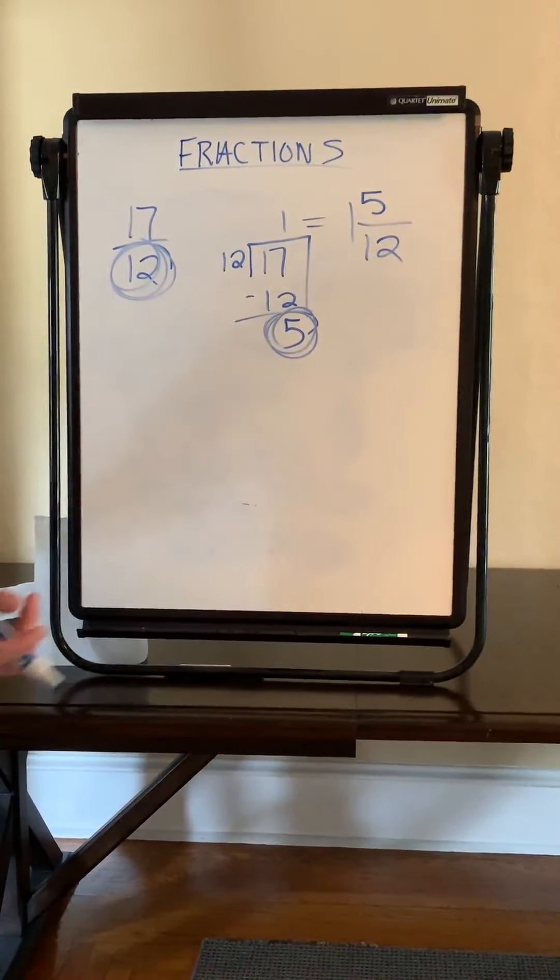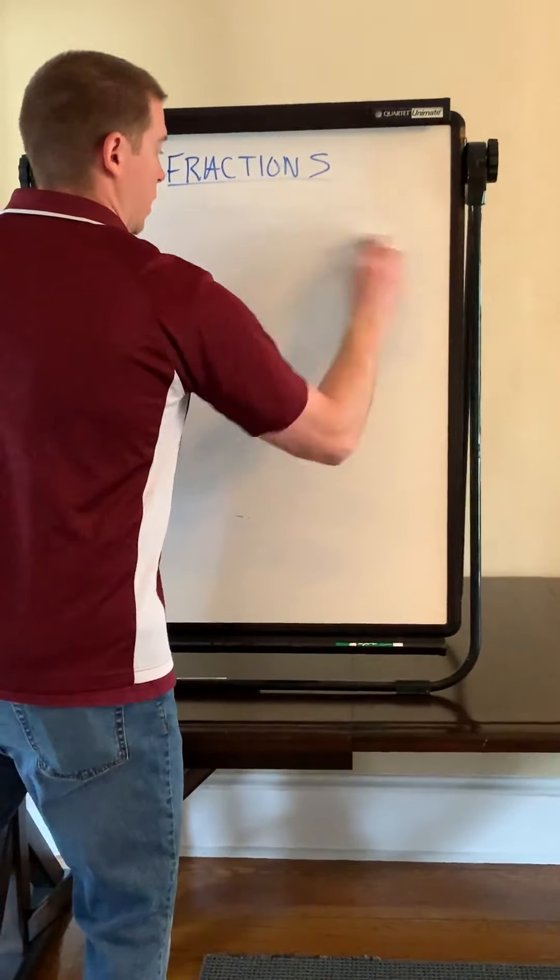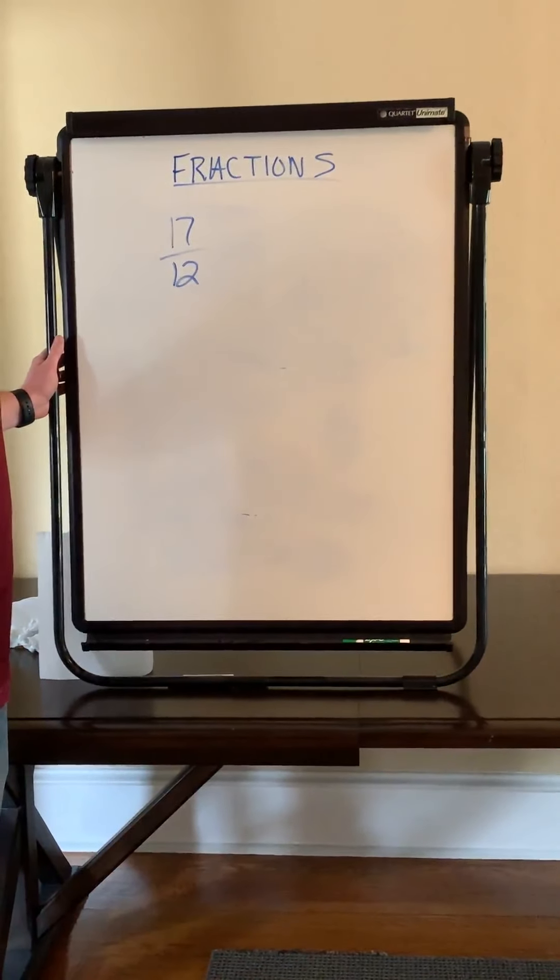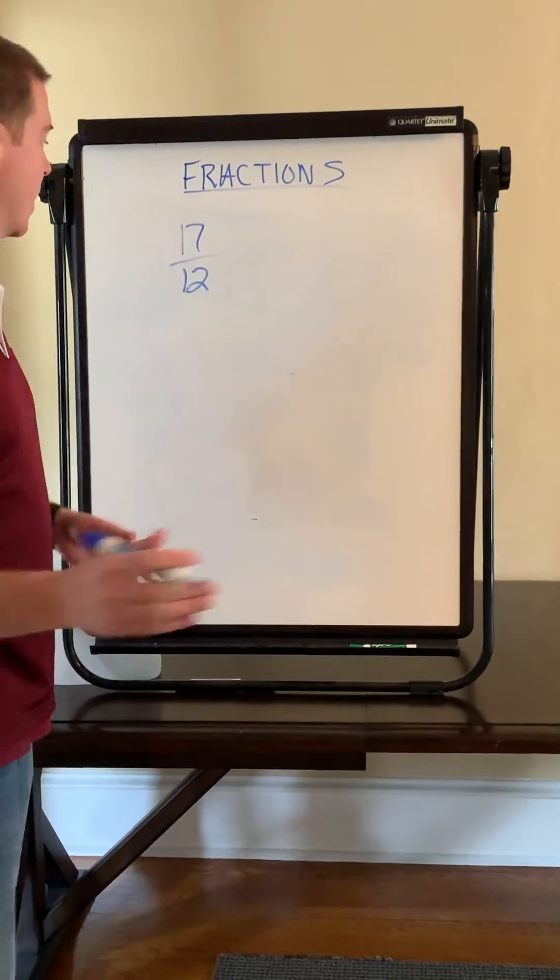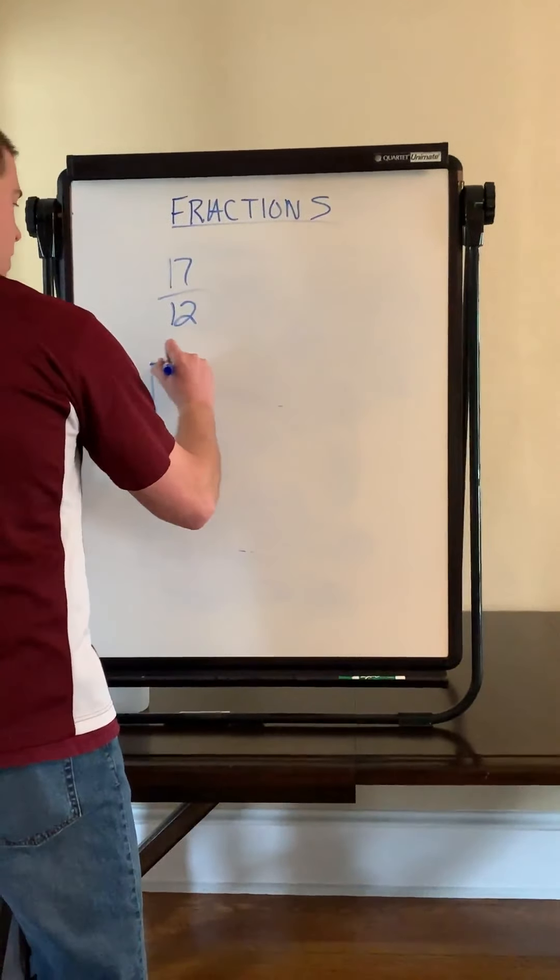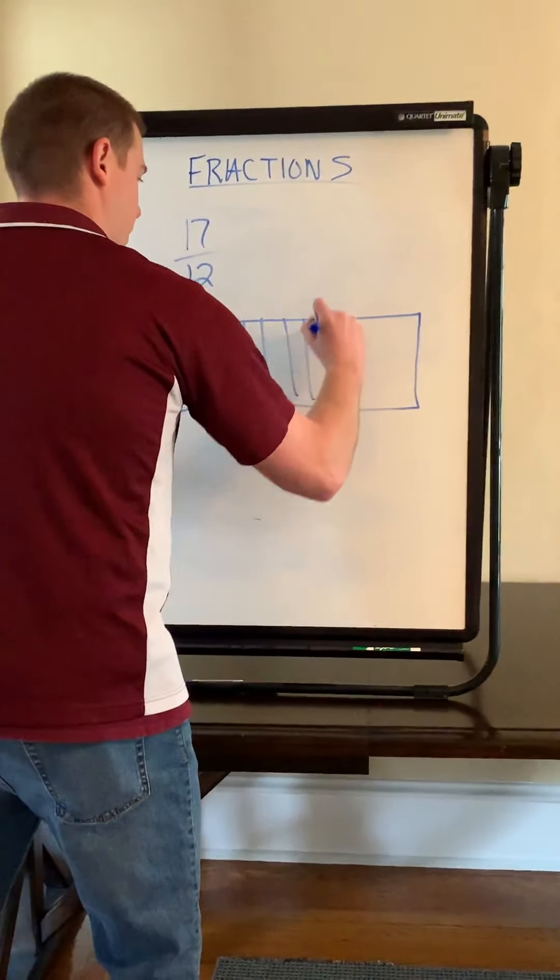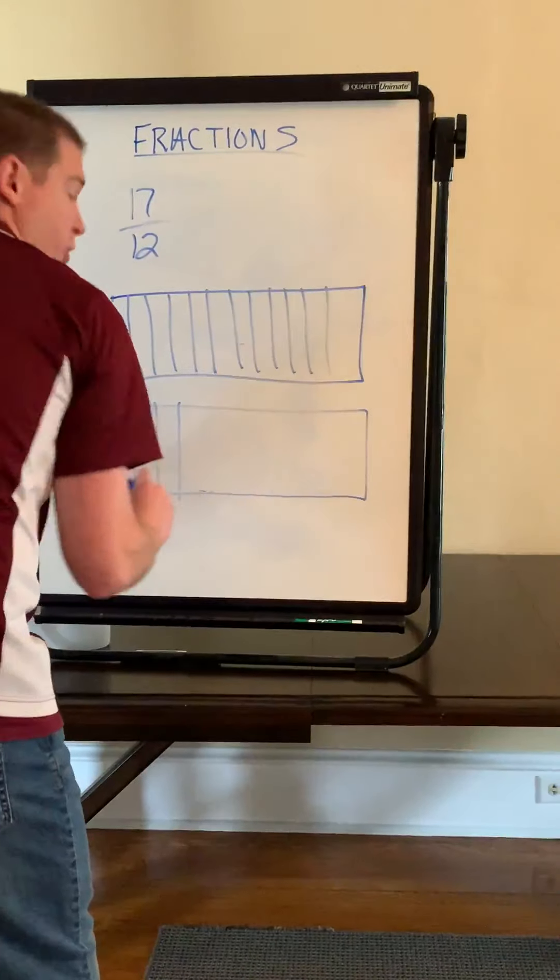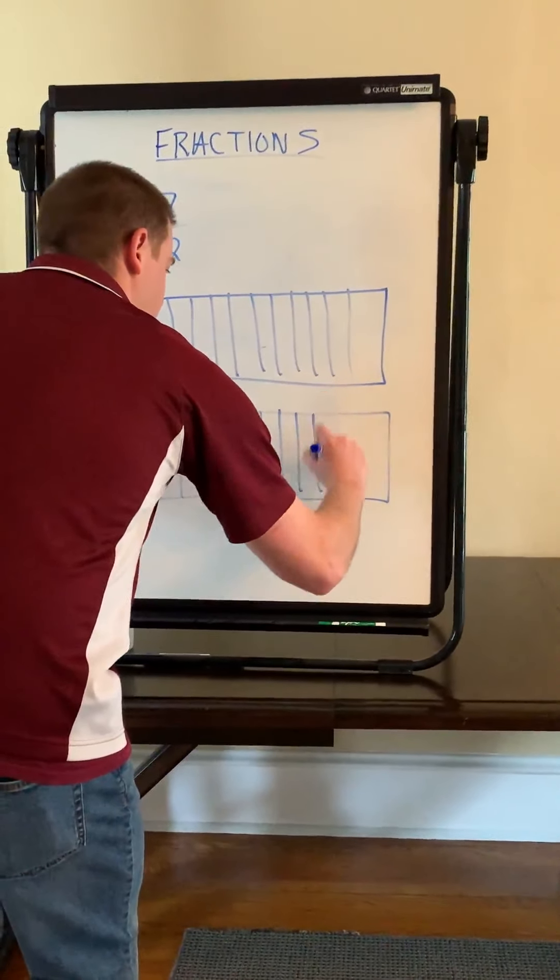Now, one other way we could fix the improper fraction of 17/12 is we could make a model. And the good thing about me showing you how to make a model is I used to be a male model. So it makes sense for me to show you how to make a model. Okay, sorry, that was a terrible joke. My daughter's rolling her eyes at me right now while she's recording. Anyway, let me show you how to make a model. So if I have 17/12, what I could do is make a model here and I'm going to separate this into twelfths. Okay, and I'm going to make one more and I'm going to separate it into twelfths. I really wish I had chosen a fraction that didn't have twelfths right now, but that's how it goes.